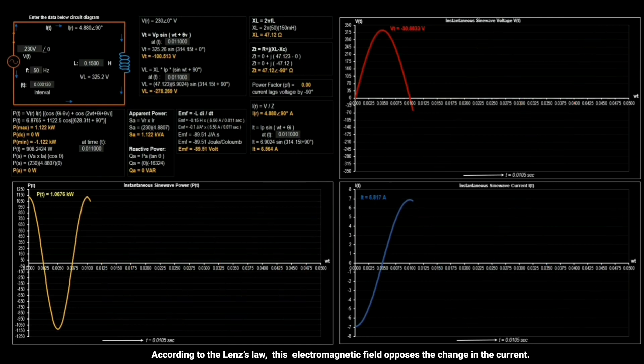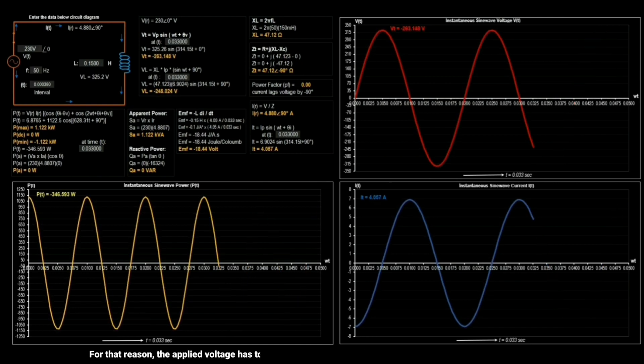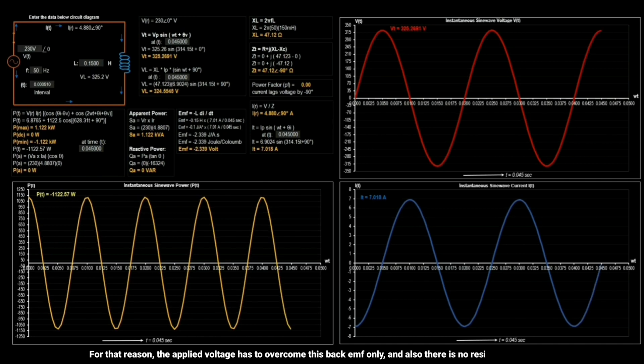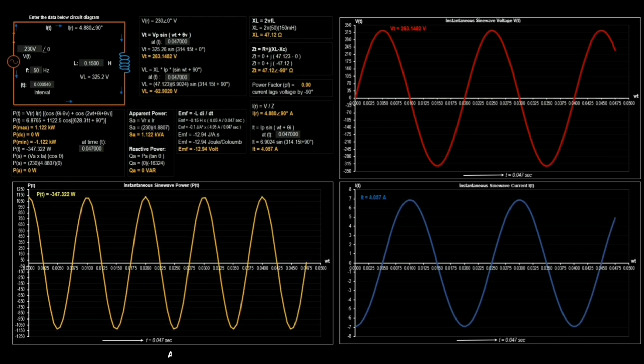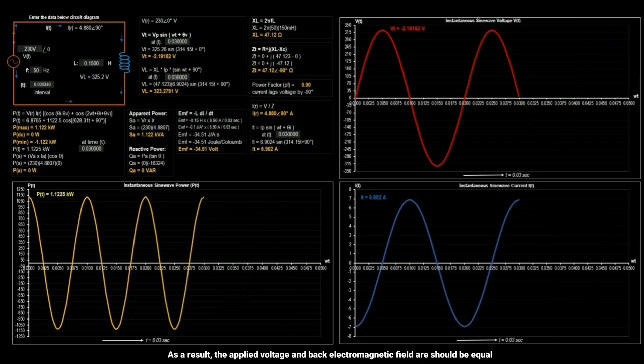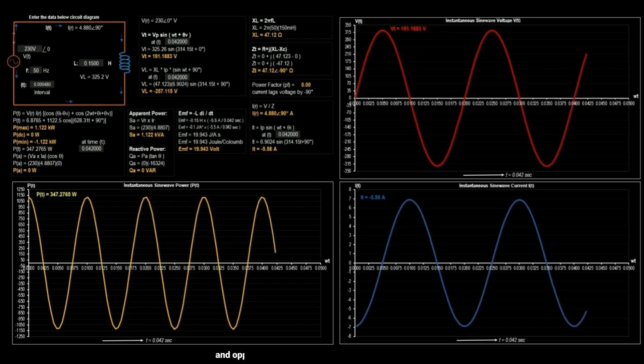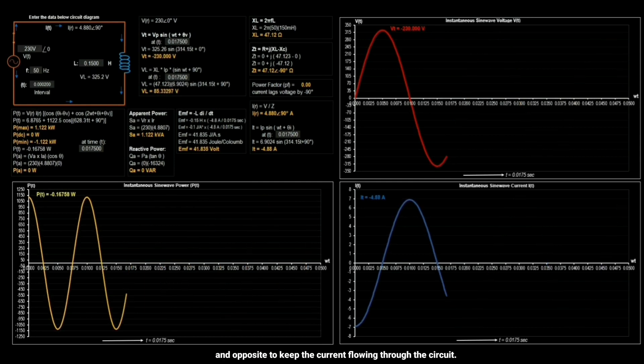For that reason, the applied voltage has to overcome this back electromagnetic field only, and also there is no resistance in the circuit. As a result, the applied voltage and back electromagnetic field are should be equal and opposite to keep the current flowing through the circuit.